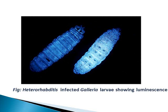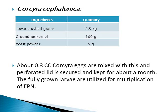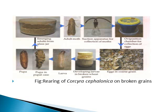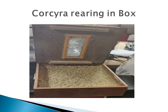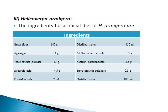This is Heterorhabditis. The Heterorhabditis-infected larvae of Galleria showing luminescence is a very particular characteristic of Heterorhabditis, not observed in the case of Steinernema. Corcyra cephalonica is another host for rearing EPN. It is commonly known as the rice moth. This is the rearing box — wooden boxes are used to rear Corcyra cephalonica. It is a very popular host insect for field collection and is a common agricultural pest that can be used in the laboratory for rearing nematodes.